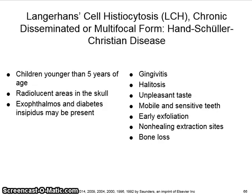The chronic disseminated or multifocal form of LCH is referred to as Hand-Schüller-Christian disease. It affects children younger than five years of age. You can see radiolucent areas in the skull. Exophthalmos and diabetes insipidus may be present. It may also include gingivitis, halitosis, unpleasant taste, mobile and sensitive teeth, early exfoliation of teeth, non-healing extraction sites, and bone loss.